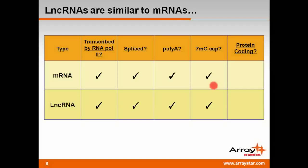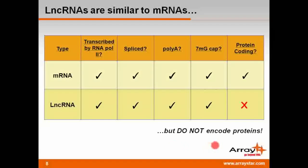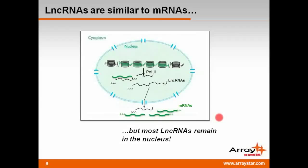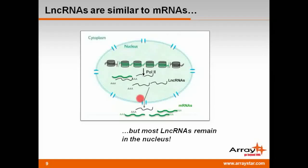The biggest difference between LNCRNAs and messenger RNAs is that LNCRNAs do not appear to encode for proteins. Another fundamental difference is that while mRNAs are nearly always exported to the cytoplasm for translation into proteins, LNCRNAs often — though not always — remain in the nucleus. This phenomenon is consistent with the observed role that some LNCRNAs play in the transcriptional and post-transcriptional regulation of gene expression.